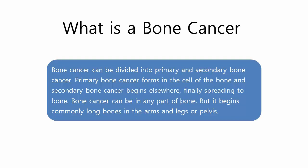What is bone cancer? Bone cancer can be divided into primary and secondary bone cancer. Primary bone cancer forms in the cells of the bone, and secondary bone cancer begins elsewhere, finally spreading to bone. Bone cancer can be in any part of the bone, but it begins commonly in long bones in the arms and legs, or the pelvis.